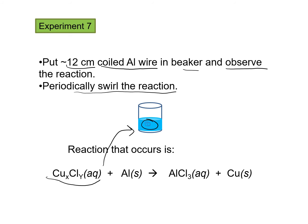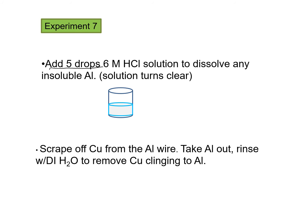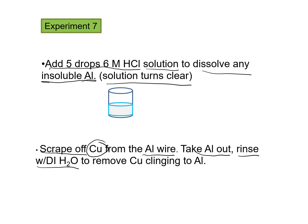Periodically swirl the reaction to keep it going. The reaction occurring is a single displacement: the copper chloride aqueous solution reacts with aluminum, forming aluminum chloride in aqueous solution — aluminum ions and chloride ions — leaving solid copper. You'll also need to add approximately five drops of 6 molar hydrochloric acid to dissolve any aluminum that was not soluble; your solution should turn clear at this point. The copper will be clinging to the aluminum wire, so scrape it off using your glass stirring rod. Then rinse the aluminum wire remnants over the beaker with DI water to remove any copper clinging to it — collect all the copper you have created.